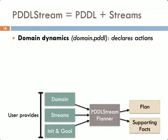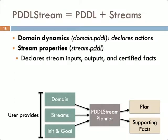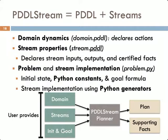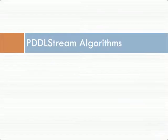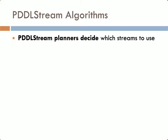PDDLStream problems are composed of the following components: a domain file that declares actions, a stream file which declares the inputs, outputs, and certified facts of streams, and a problem Python file that specifies the initial state, goal formula, as well as provides the implementation for the stream Python generators. We present several PDDLStream algorithms that operate on this problem description alone. Although a user specifies which streams are available, PDDLStream planners decide which streams to actually apply and which inputs to provide to them, and then how to connect them ultimately with actions.